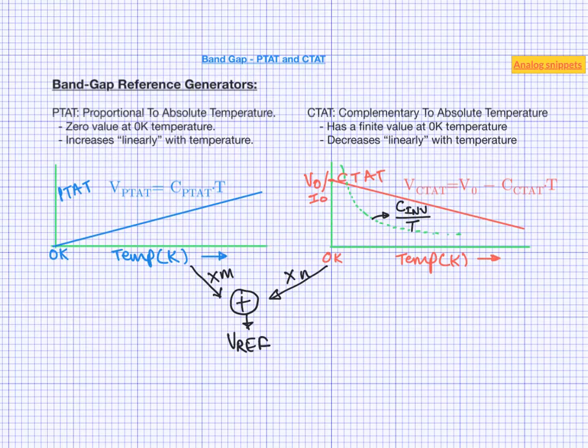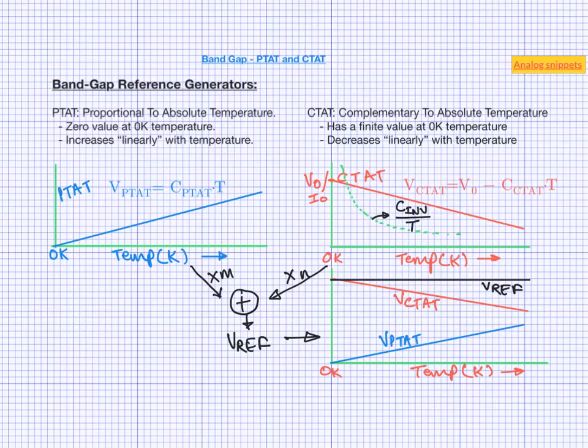And here we have a temperature independent bandgap reference voltage. Now it may seem as a convoluted roundabout way of generating a reference voltage. But the reason that this is done this way is that we can easily generate a super accurate PTAT and a reasonably accurate CTAT using semiconductor devices.